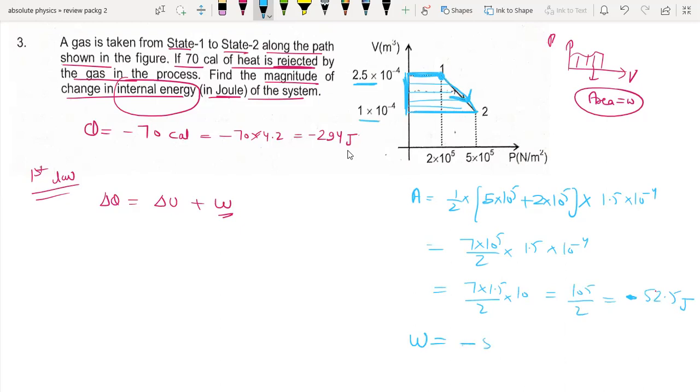Delta U equals minus 294 plus minus 52.5 equals minus 346.5 joules. This is the answer to this question. Please like, comment, subscribe. Thanks for watching.